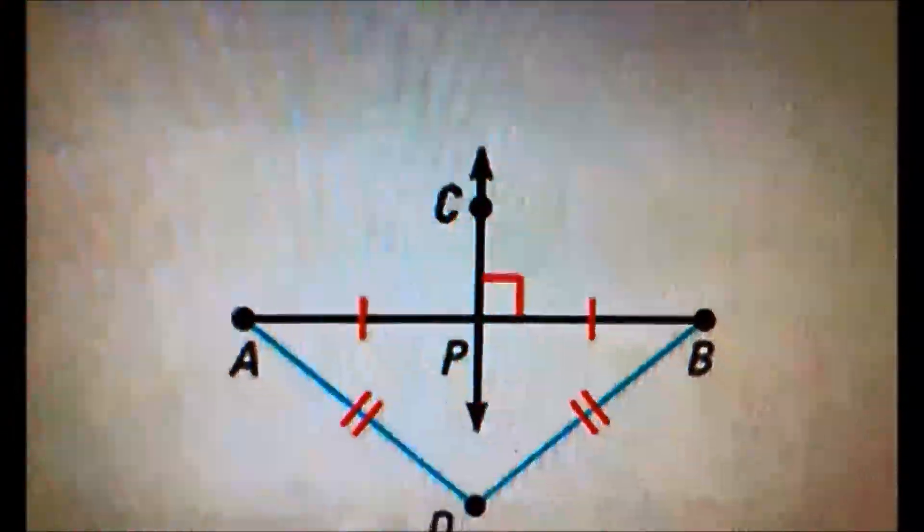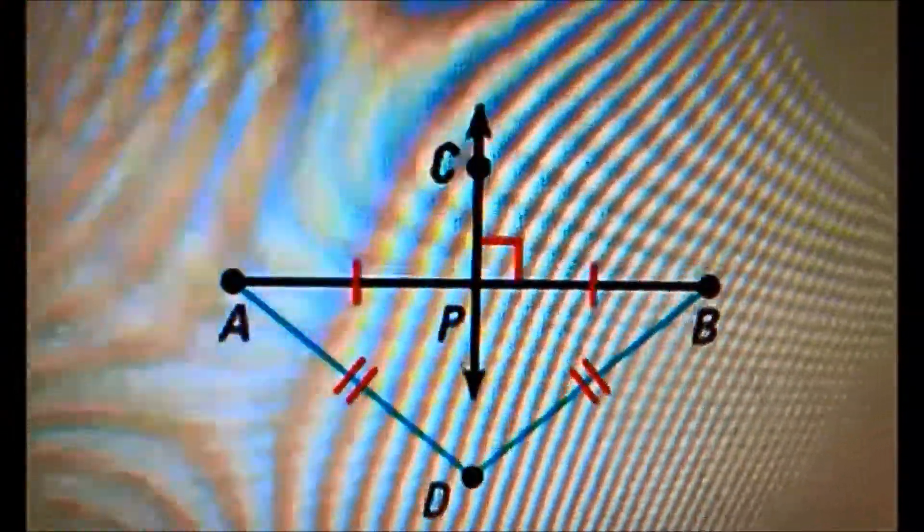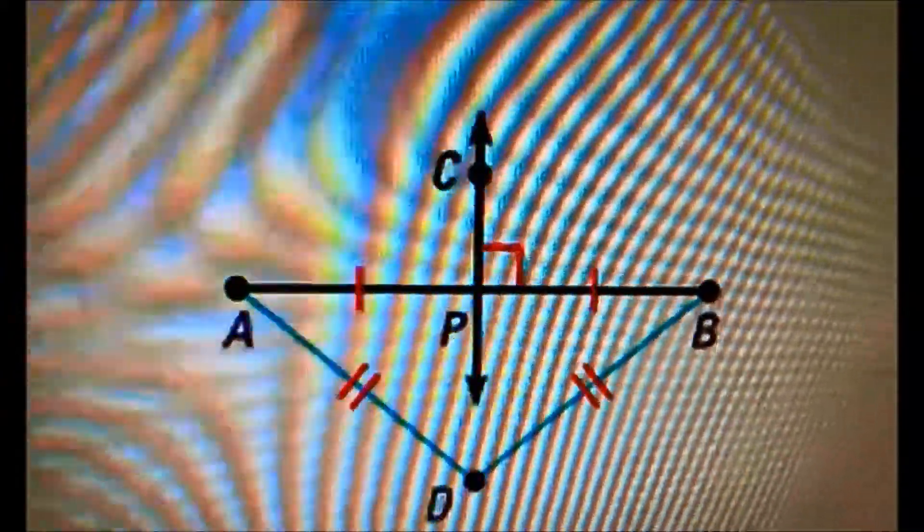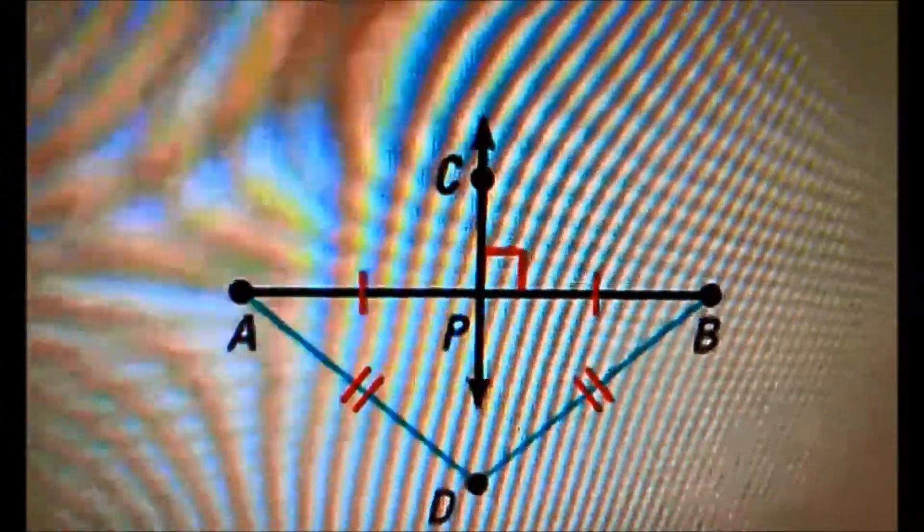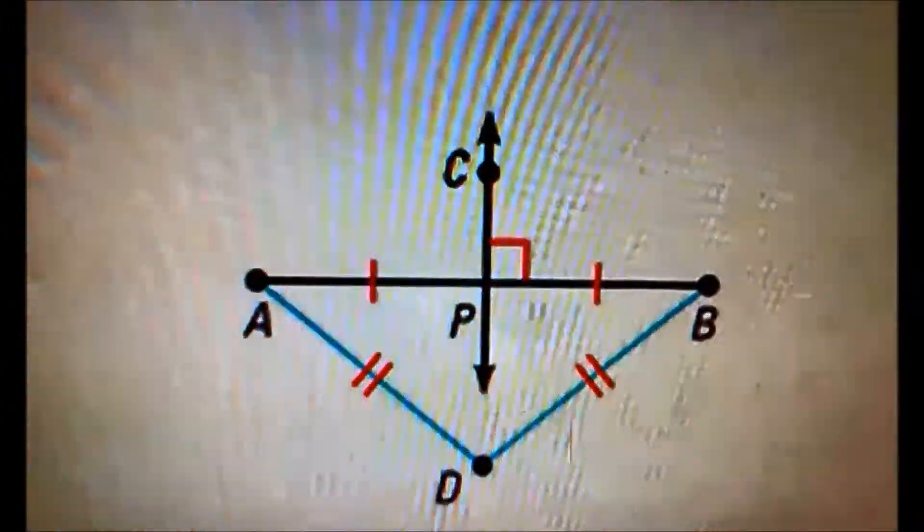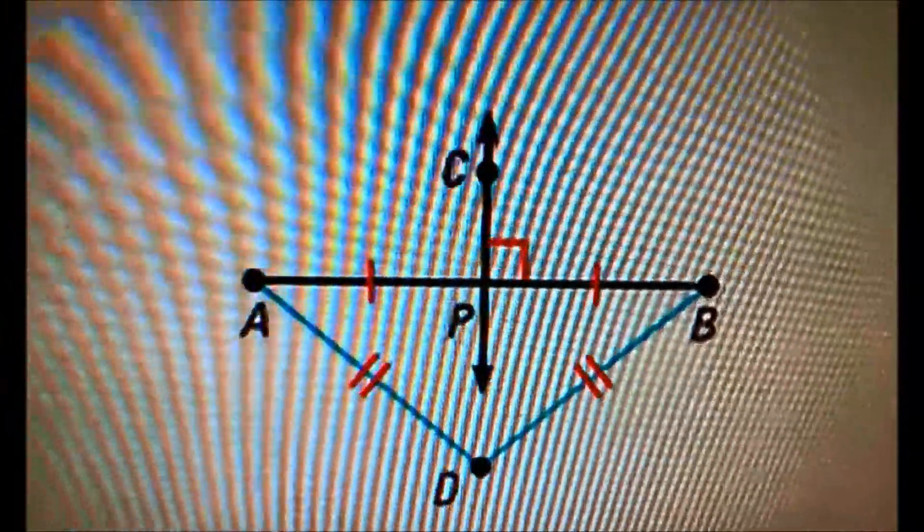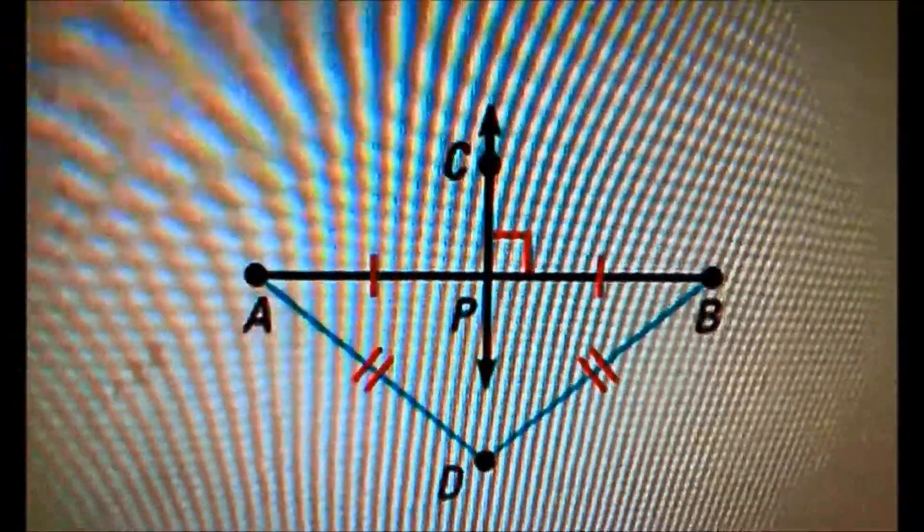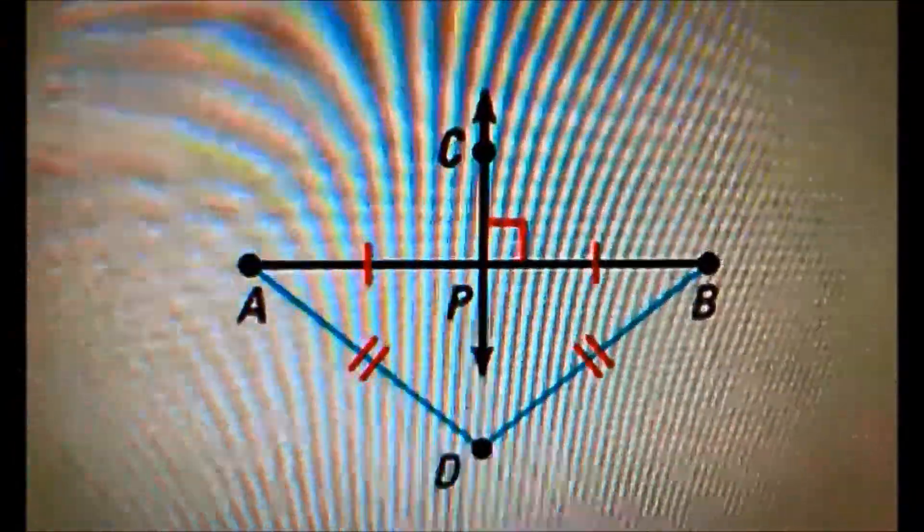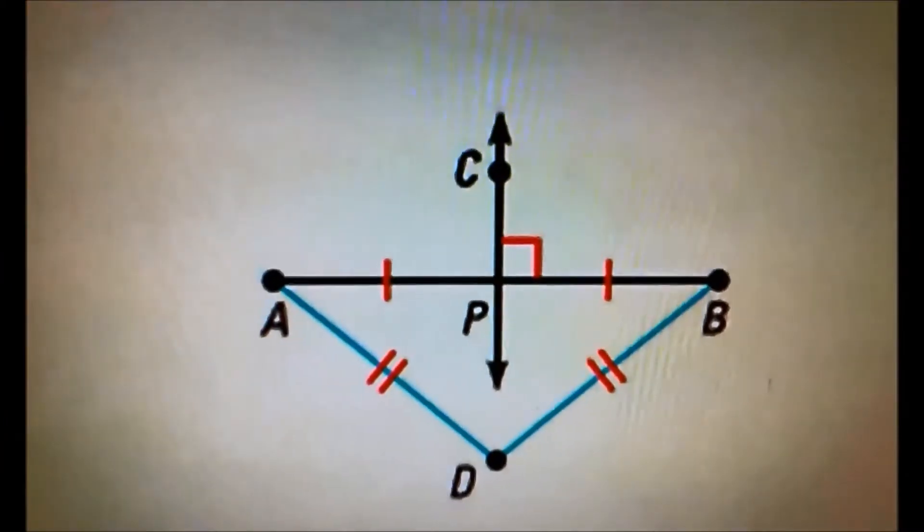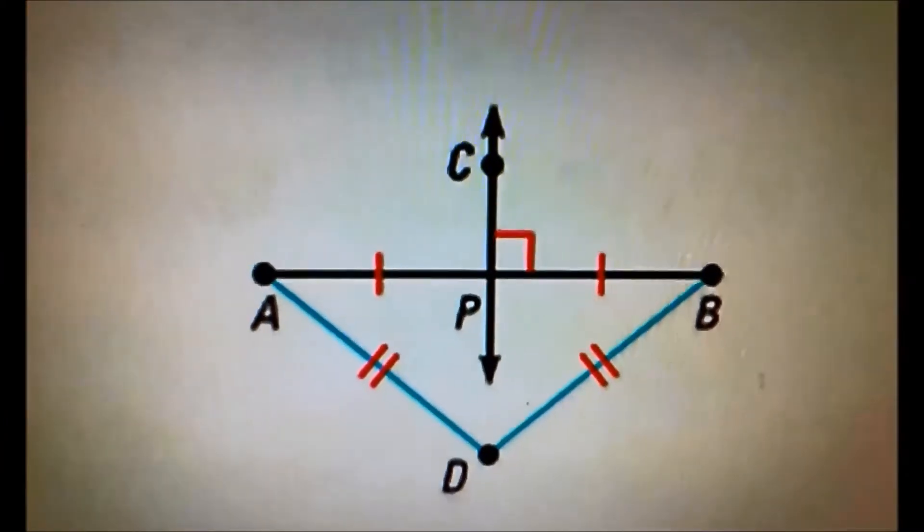Moving on. We're using this example for the converse of perpendicular bisector theorem. We know converse in chapter 2, which means it switches the theorem. Based on this, it's switching the perpendicular bisector theorem. So, it would be, if DA is equal to DB, then D lies on the perpendicular bisector of AB.